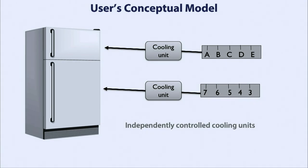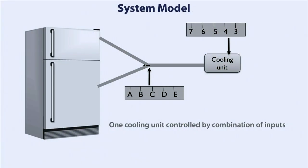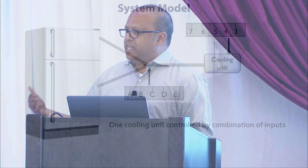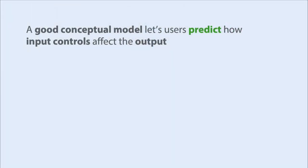It turns out that's not the right model. The right model is: one dial controls the single cooling unit and another controls a valve — they're coupled in a way that doesn't match the conceptual model. Because of that, Norman couldn't figure out how to adjust the dials to get the temperature he wanted. The mapping from controls to output was unpredictable.